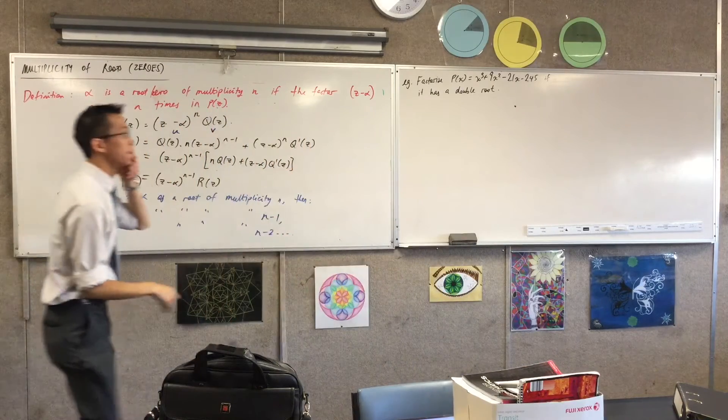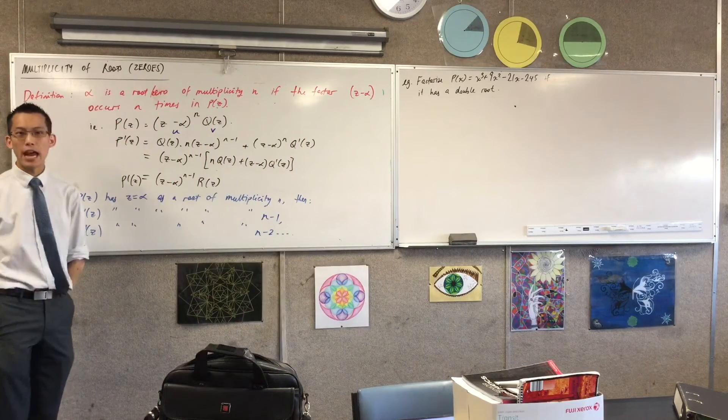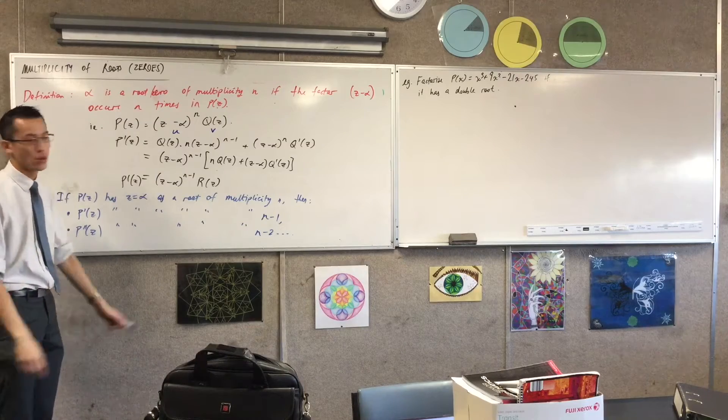Given this polynomial, again degree 3, factorize it if it has a double root. So what are we going to do in this thing?